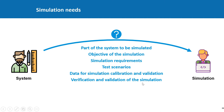If you have to remember one slide, it's this one — the composition of the simulation needs. This should include the part of the system to be simulated, the objective of the simulation, the simulation requirements, the test scenarios, the data for simulation calibration and validation, and finally the verification and validation of the simulation. But how can we specify all that in a complete, easy, and traceable way?